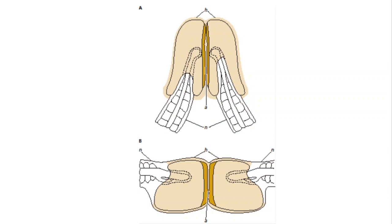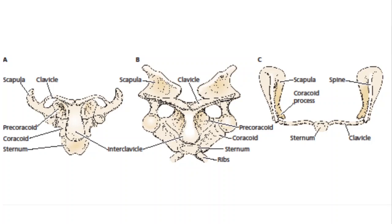The sperm are different in monotremes and in marsupials as well — they're not like eutherian sperm. And the pectoral girdle is fundamentally different. The pectoral girdle in monotremes is very reptile-like. Reptiles have an interclavicle, coracoids, sternum, precoracoids, scapula, superscapula, and clavicles. By the time you get to eutherian mammals, you simply have the scapula and the sternum, and in some forms a clavicle.